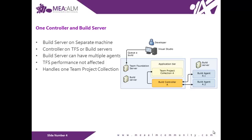We have a dedicated build server in this example. In the picture, it shows that you have only two build agents. Of course, you may have one or more build agents depending on the number of cores your CPU has. The best practice is you can have one build agent per CPU core. The only disadvantage of this topology is you can only run builds for one team project collection. If you have multiple team project collections, you can't do builds for the other collections unless you install another build controller.